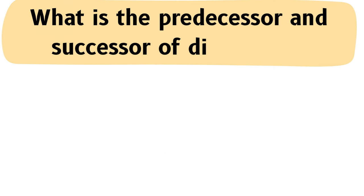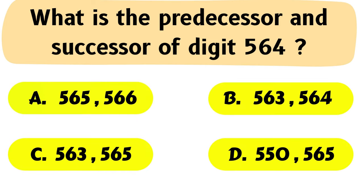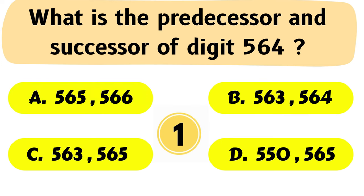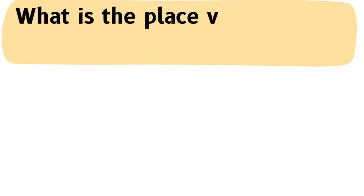Question No. 18: What is the predecessor and the successor of digit 564? The correct answer is Option C: 563, 565.